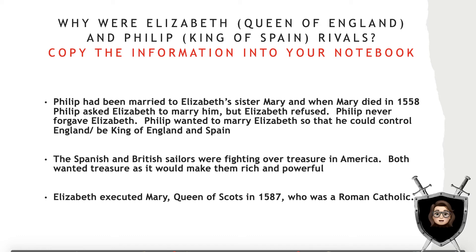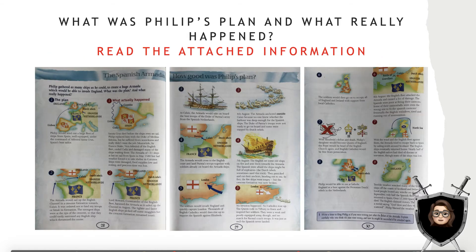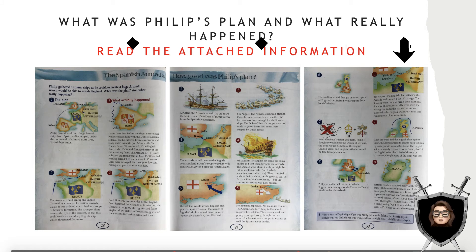Elizabeth executed Mary Queen of Scots in 1587. She was Roman Catholic and so was Philip — this caused their rivalry to grow. The images on the screen are attached with your Google Classroom assignment. On the left hand side you can see what Philip's plan was; on the right hand side you can see what actually happened. Read this information carefully.